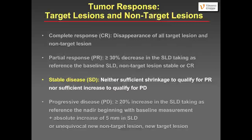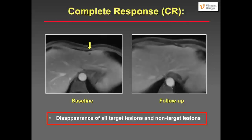An example of complete response: a patient where MRI was used because the liver metastases were quite small. The baseline scan shows a lesion approximately one centimeter. At follow-up, that lesion is completely gone — disappearance of all target lesions and non-target lesions.